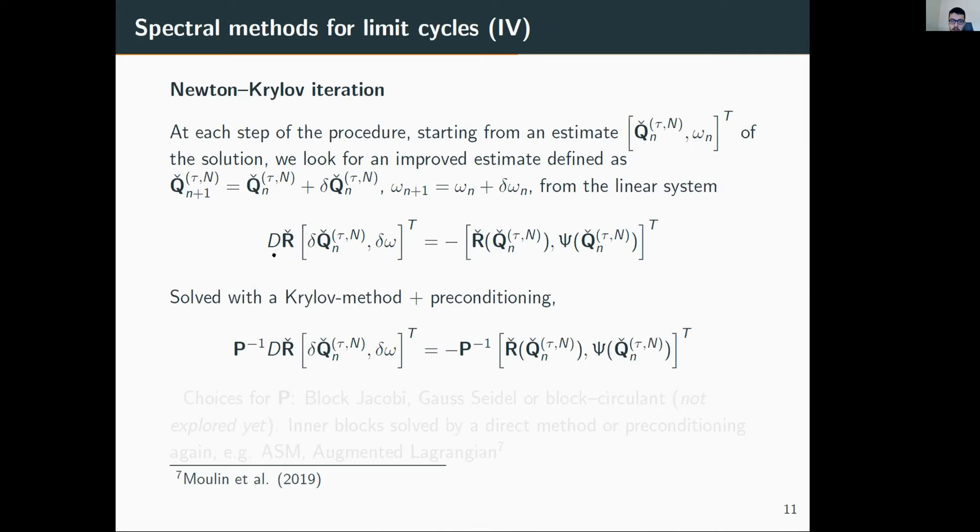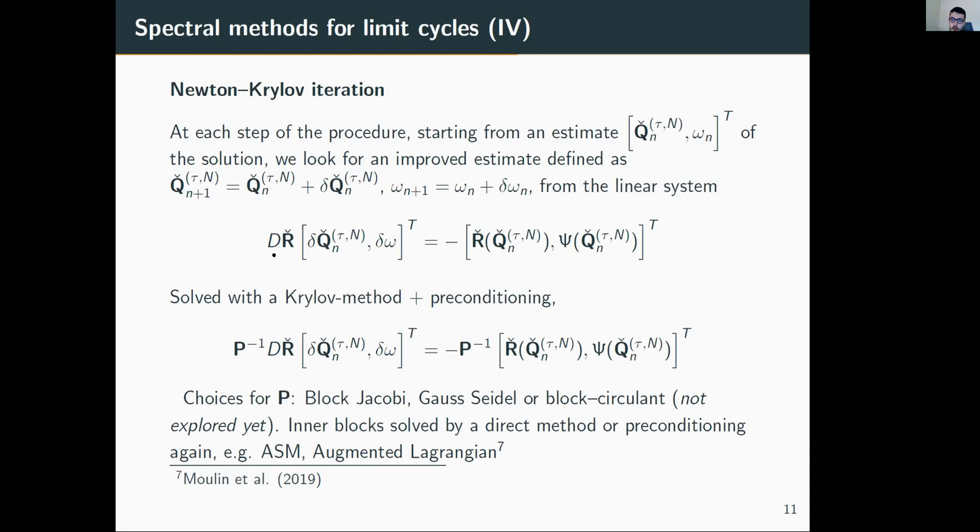We require preconditioning. So far we've tested block Jacobi or Gauss-Seidel preconditioners, which are okay whenever the spectral energy is not large—meaning the energy of high Fourier modes. Other options are block Toeplitz, taking advantage of discrete transform structure, but we haven't explored that so far. If the spatial problem has a large number of degrees of freedom, we may also use inner preconditioning—additive Schwarz methods or problem-specific methods like the augmented Lagrangian discussed before. These are available either as free source code or in libraries like PETSc.